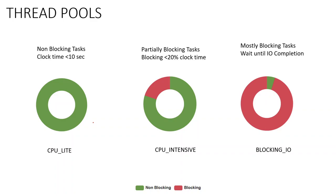Any message processor whose functionality never blocks the thread falls under CPU Light. For example, Set Payload, Set Variable, and Logger — all these components fall under the CPU Light thread pool, and any task for these processors is handled by the CPU Light scheduler.